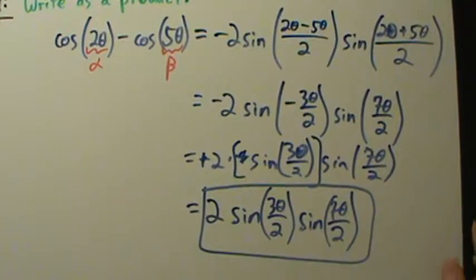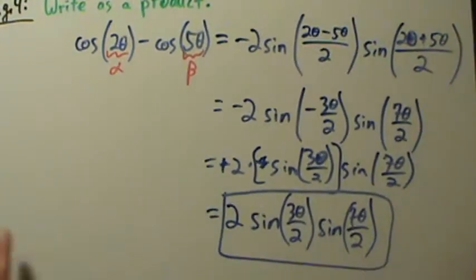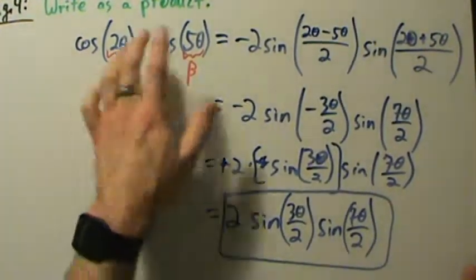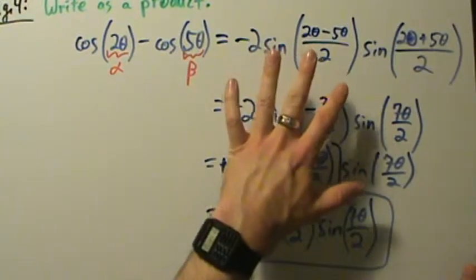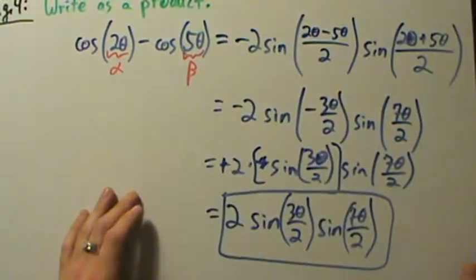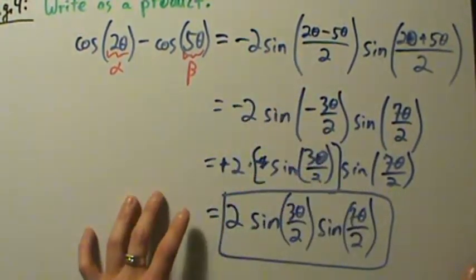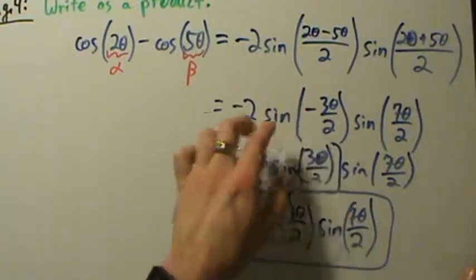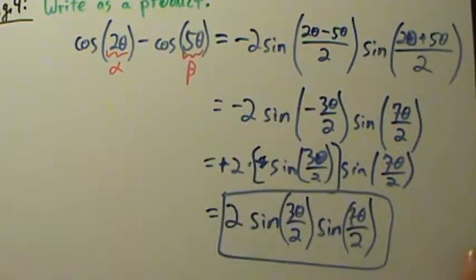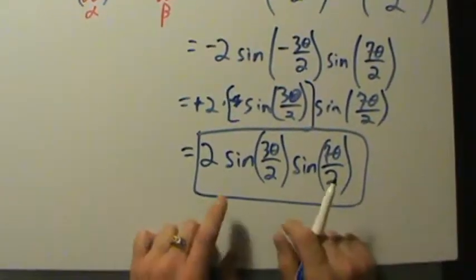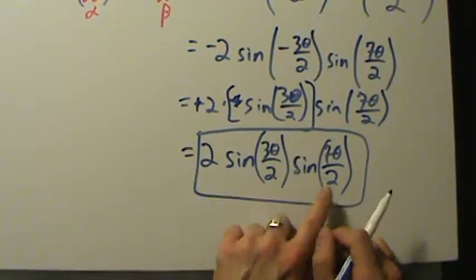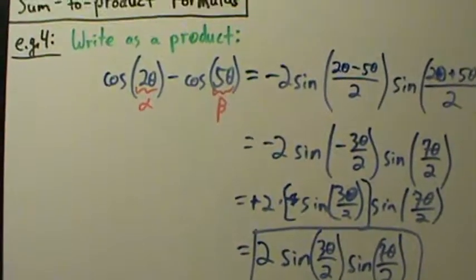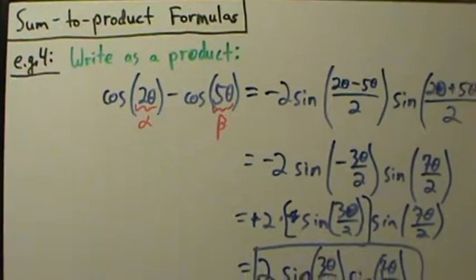It's pretty straightforward — nothing too complicated. Just a matter of making sure we use the right formula, identify alpha and beta, plug them in appropriately, simplify, and remember that sine is an odd function so we can simplify the minus sign. We end up with two sine of three theta over two times sine of seven theta over two. That's example four of using the sum to product formulas.